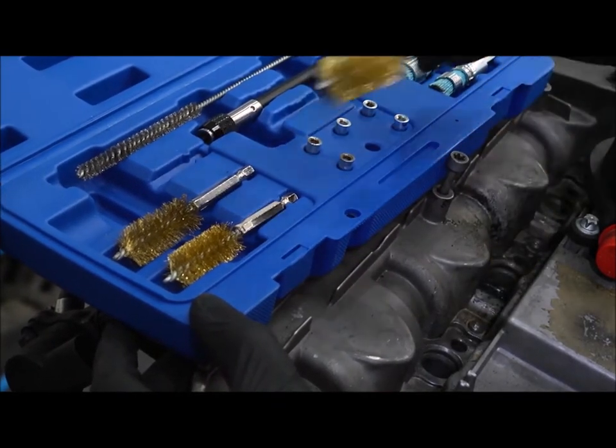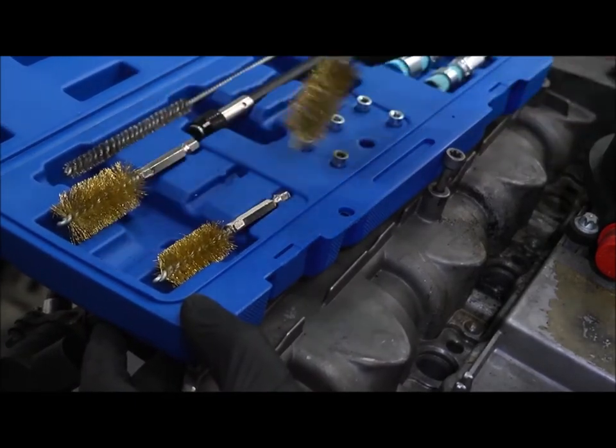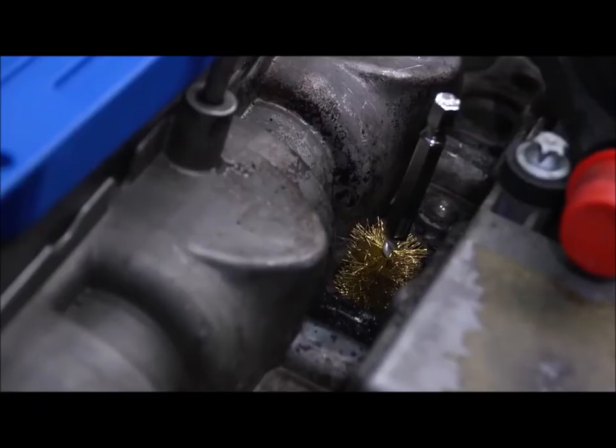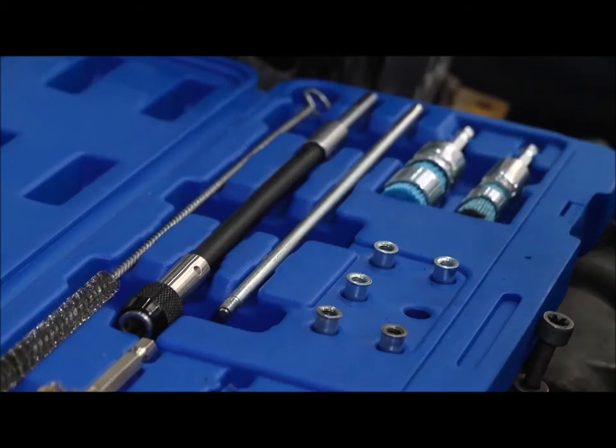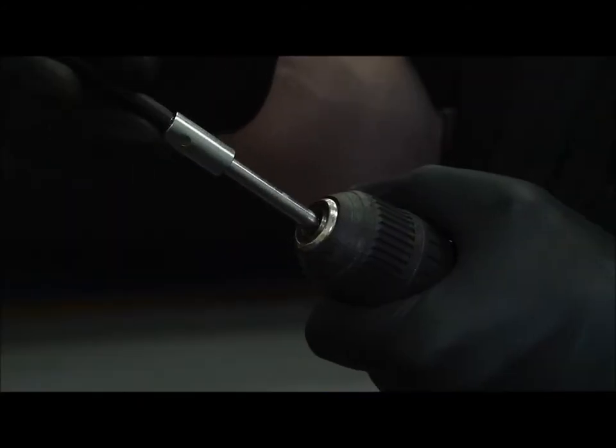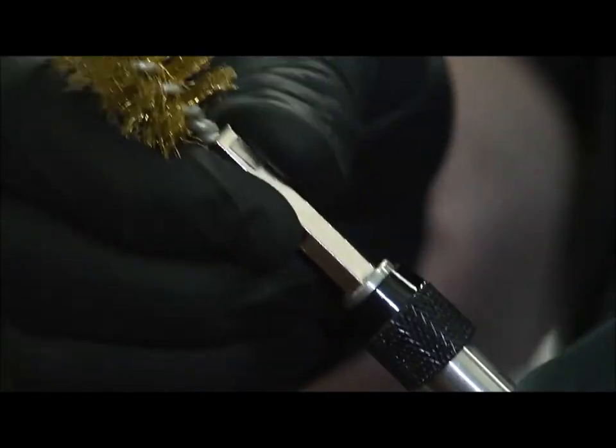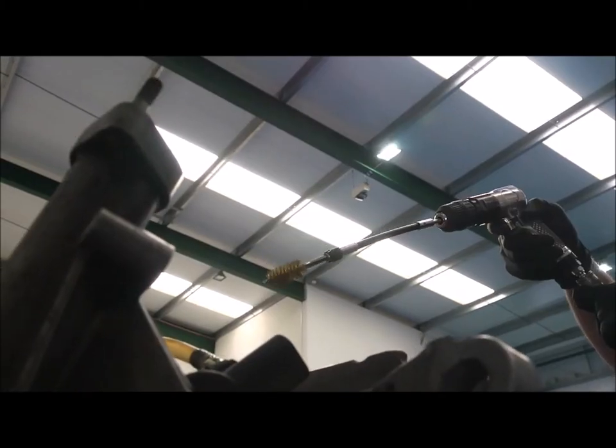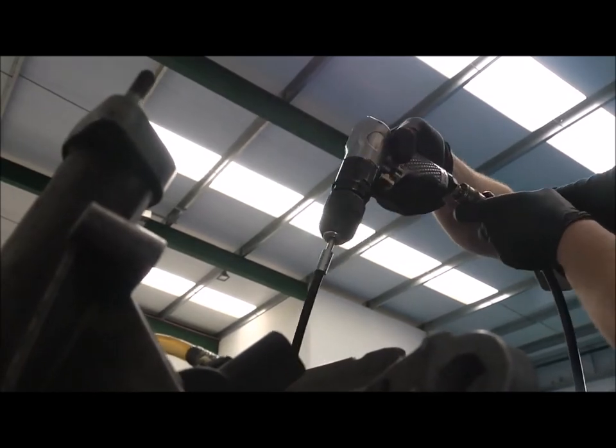Now choose an appropriately sized cleaning brush from the three provided and fit to the quick chuck flexible extension. Use an air or electric power drill and ensure that all carbon and dirt deposits have been removed from the injector port.